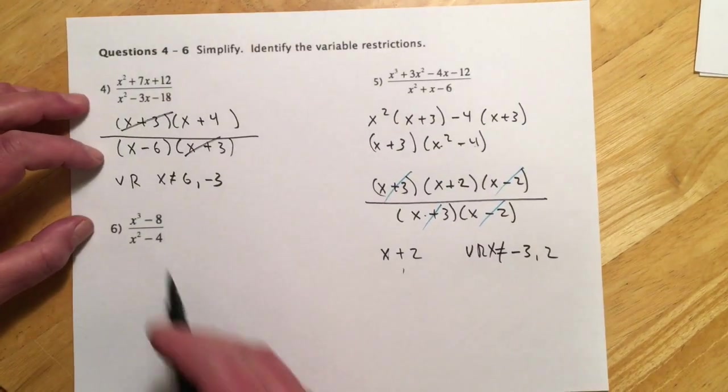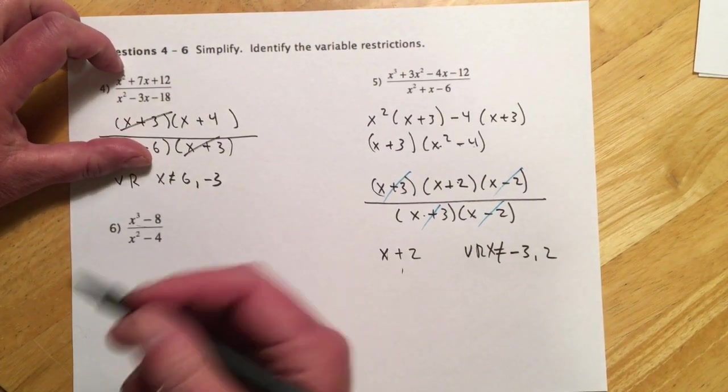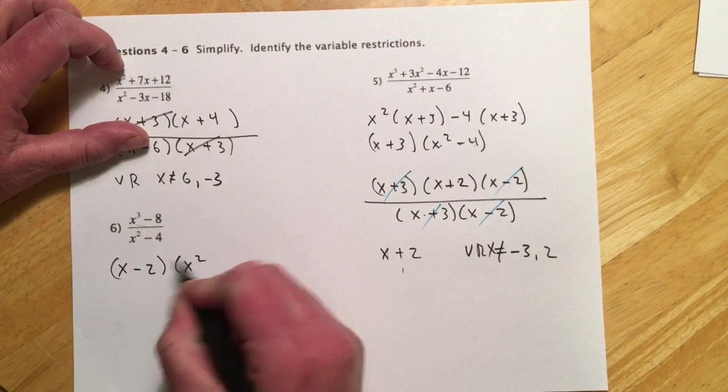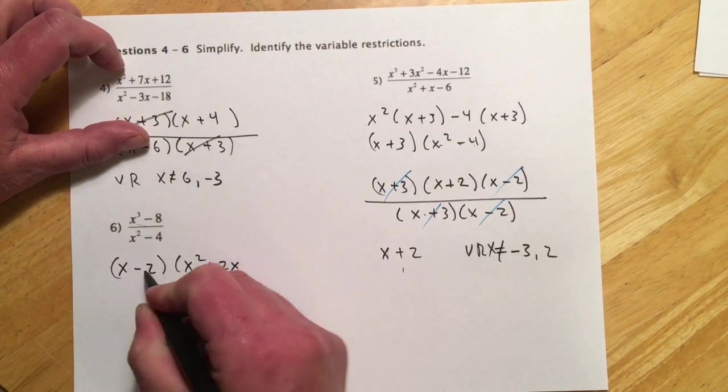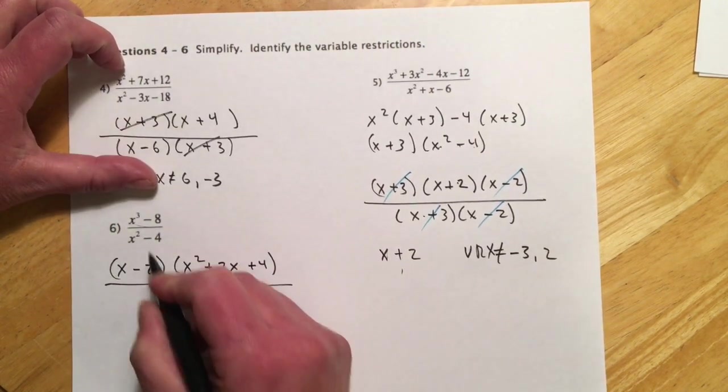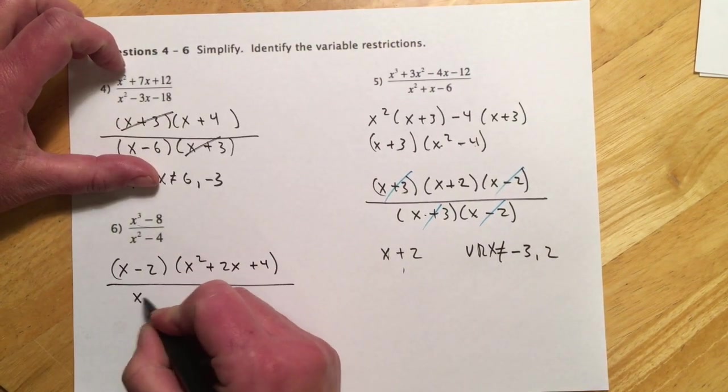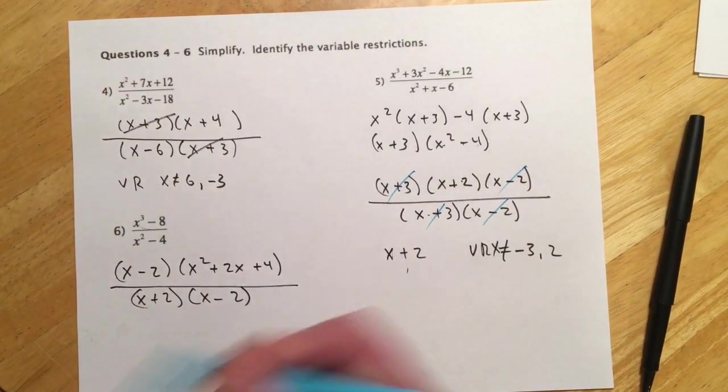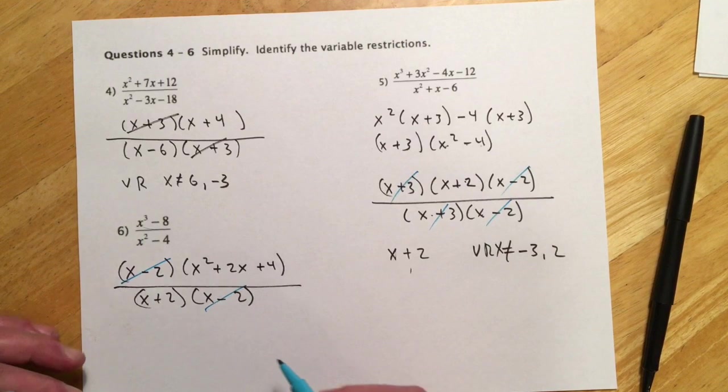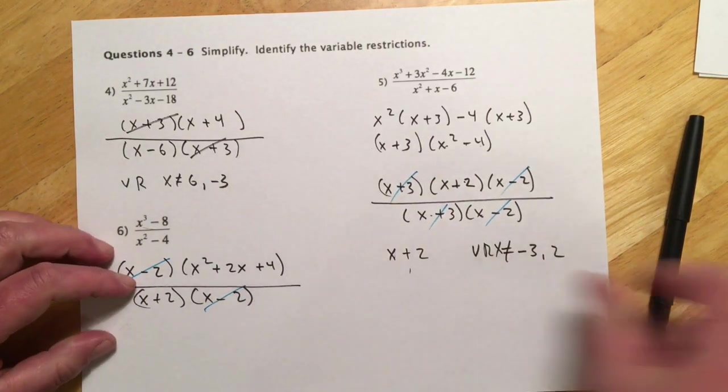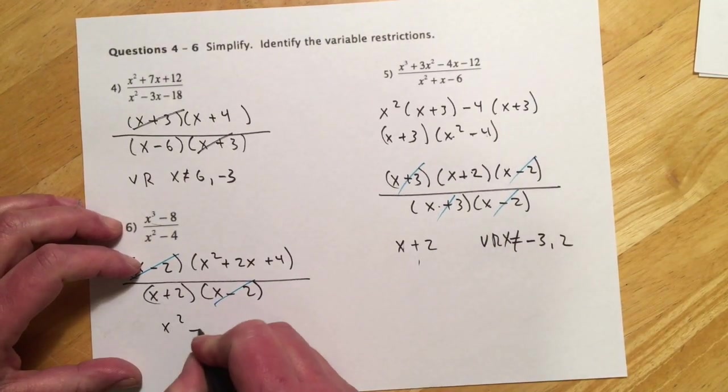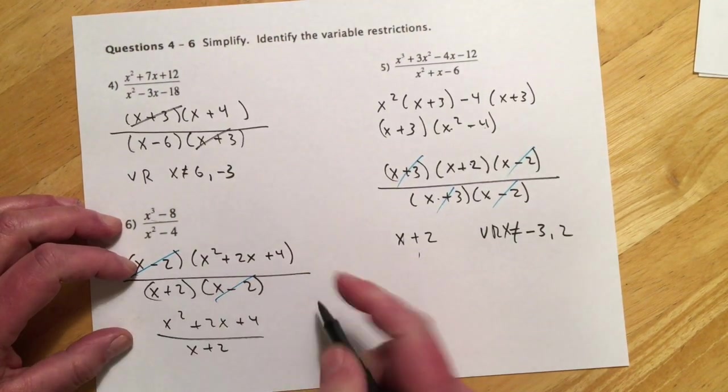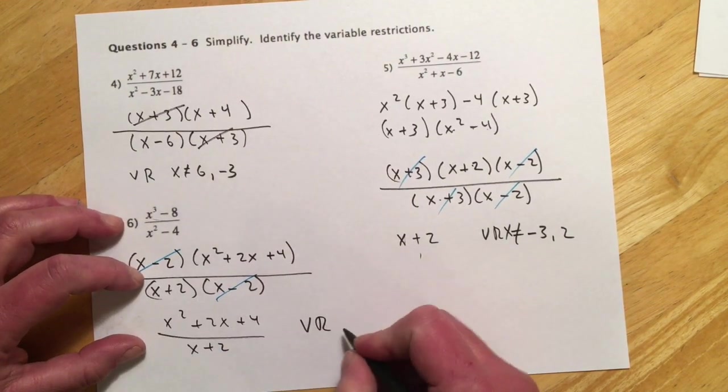One more down here. Number 6. So the numerator is a cube formula. So that's going to go x minus 2 and then x squared plus 2x plus 4. Downstairs, difference of squares. So x plus 2 and x minus 2. And canceling, we knock out those minus 2's. And so then all that's left is the x squared plus 2x plus 4 over x plus 2. And our restrictions are going to be negative 2, positive 2.